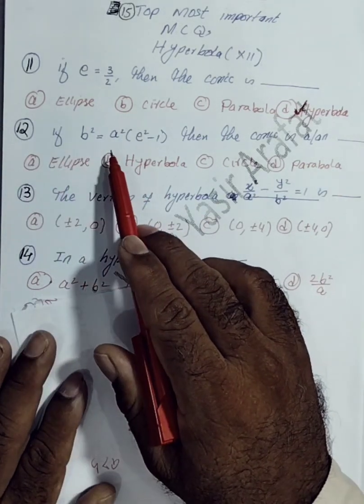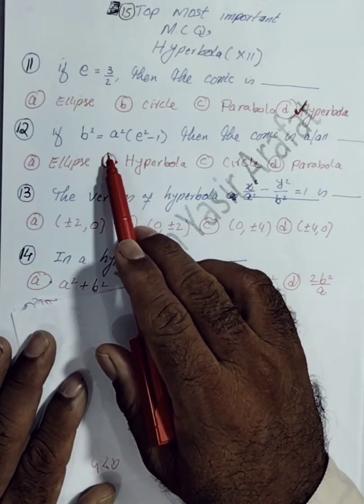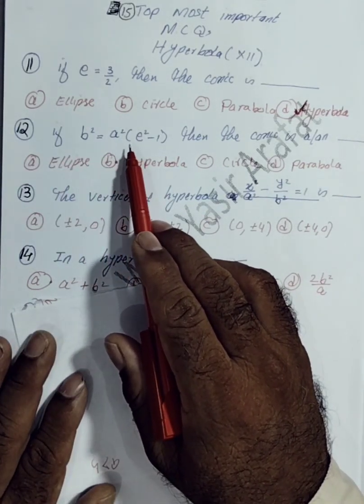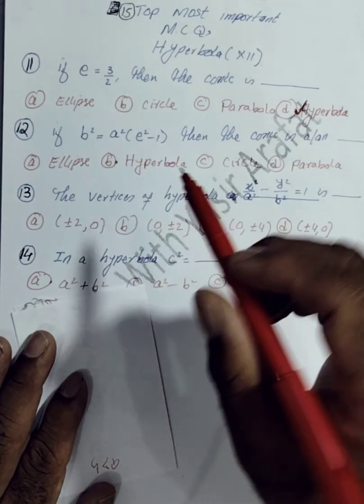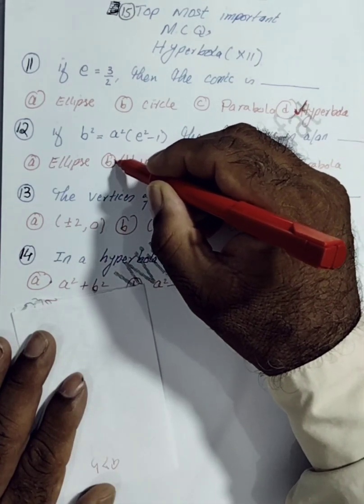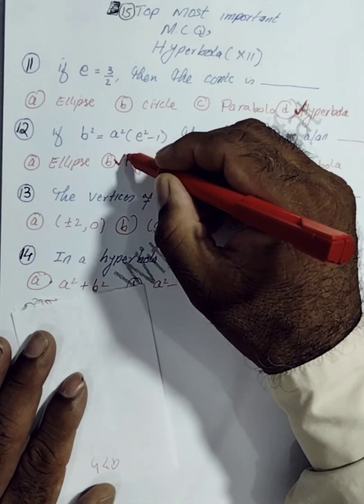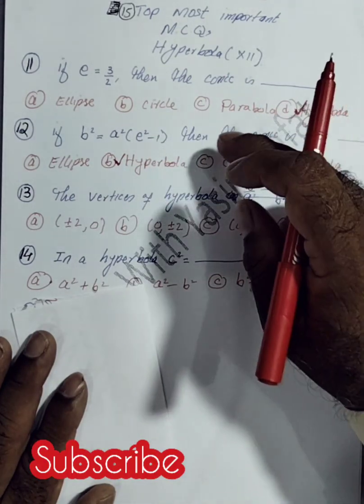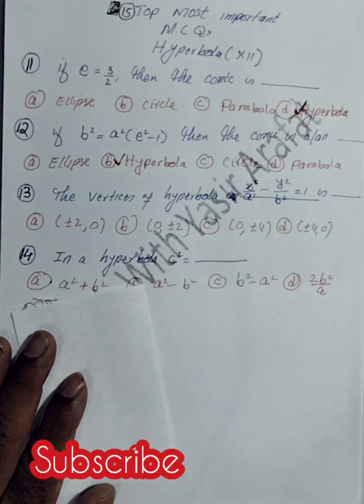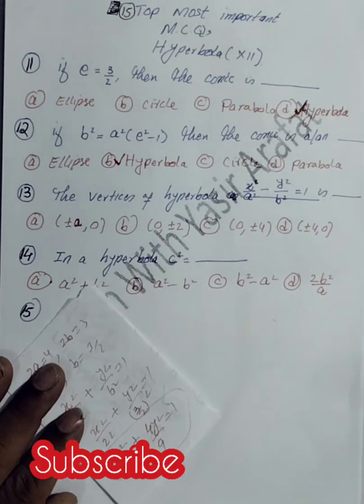The twelfth MCQ: B² = A²(E² − 1). This relation holds for a hyperbola. If it were 1 − E², the relation would be for an ellipse.